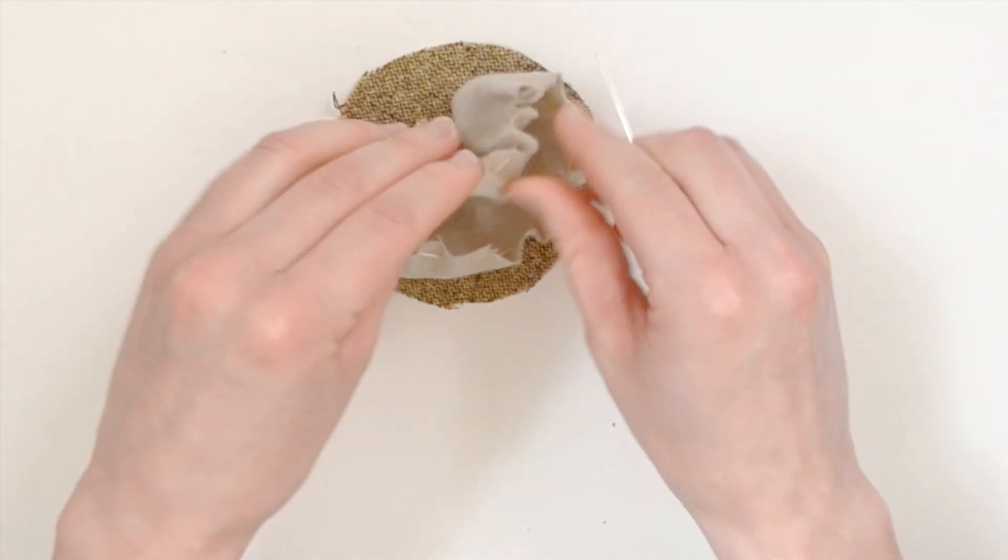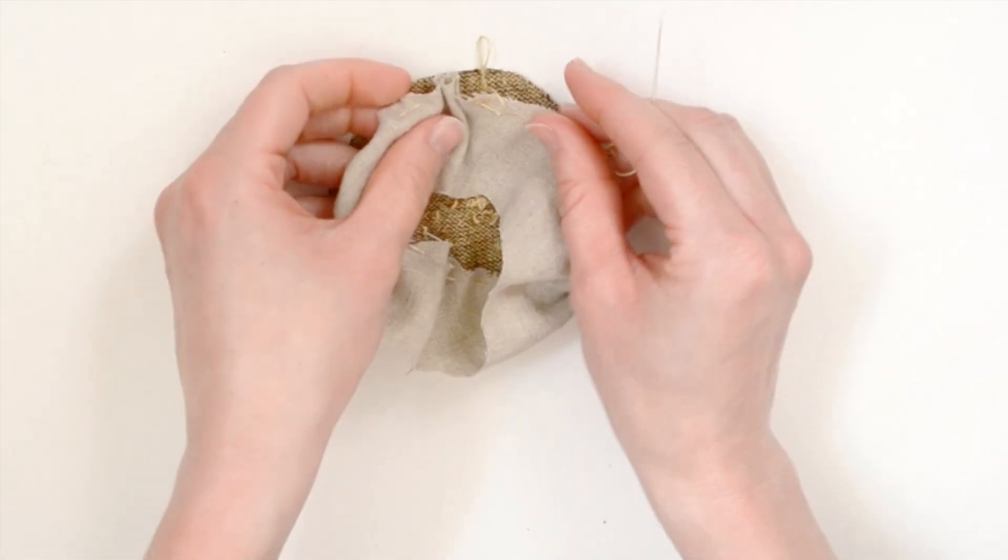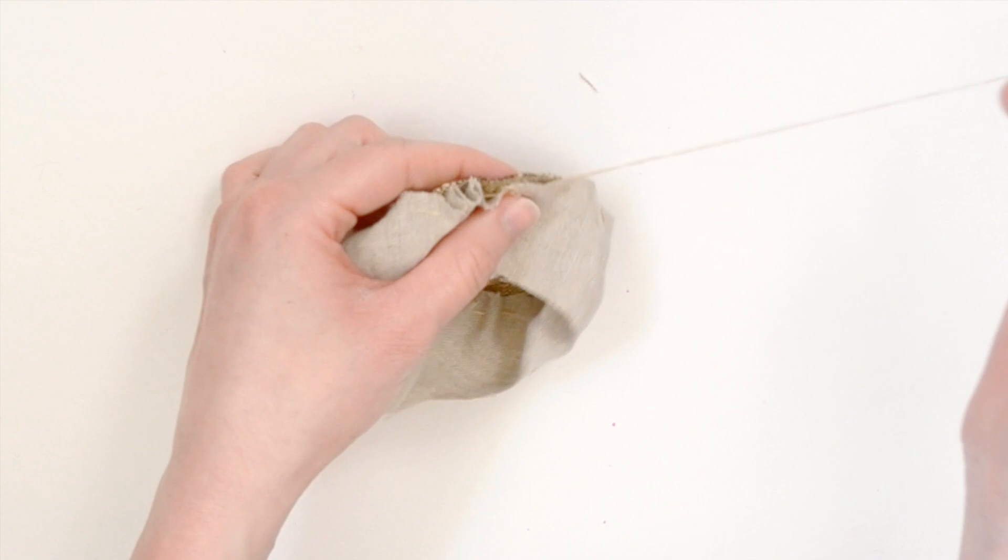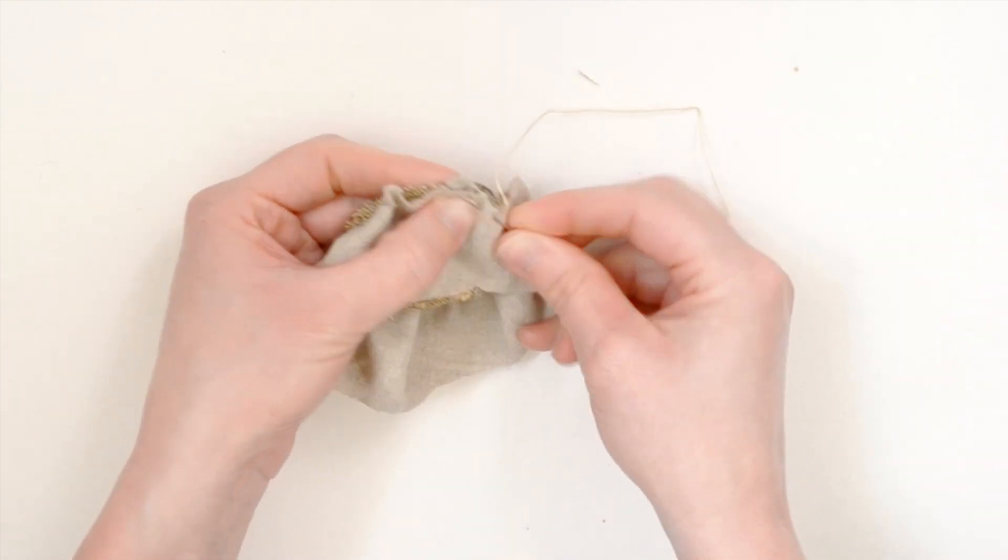Again, make sure your right sides are facing and that the wrong sides are facing out. Using your preferred sewing method, stitch around the edge with about an eighth of an inch or a quarter of an inch seam allowance.